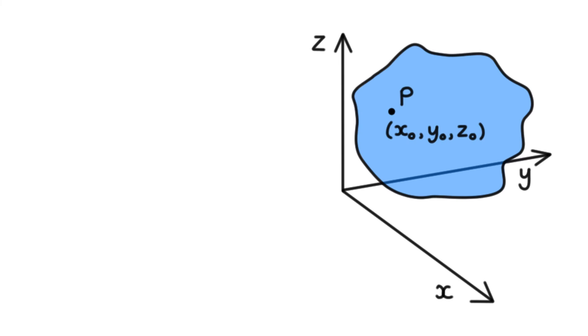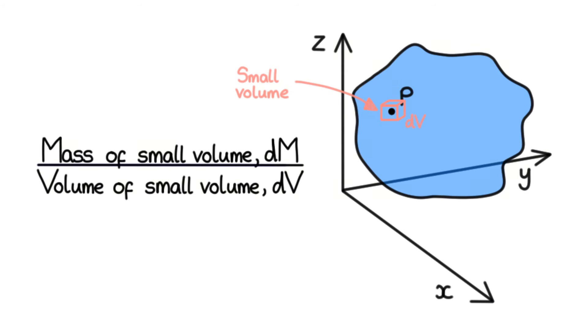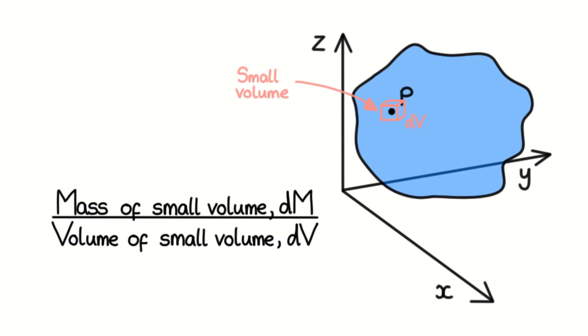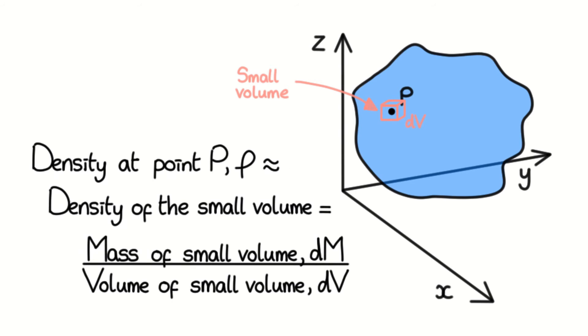So we briefly touched upon this. What we can do instead is select a volume. We'll call that dV and it'll surround and centre on point P. By dividing the mass of this volume, dM, by its volume, dV, we can find the density of this volume, which we can use to represent the density at point P.